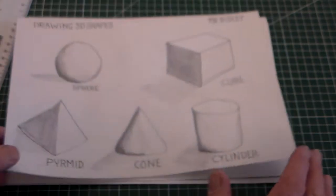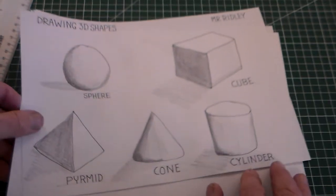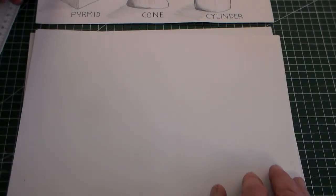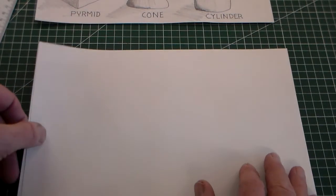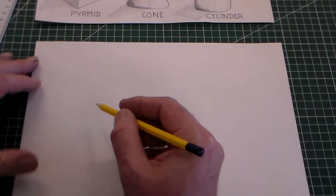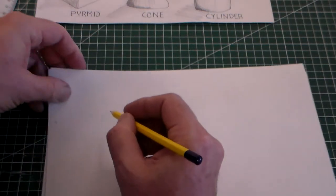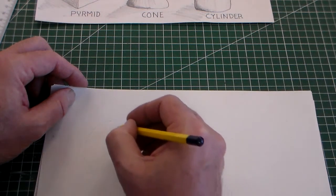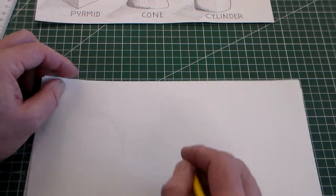So the first thing we're going to do is we're going to plan out our five shapes and we're going to draw them on this sheet here. So if we start off with the pencil, we're going to draw the shapes lightly with a pencil.